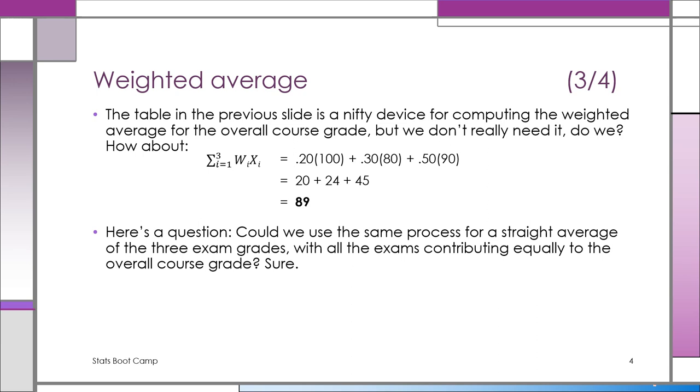Here's a question. What formula would we use if we had all the same weights for the grades, if we were weighing them all the same in order to come up with a course average?